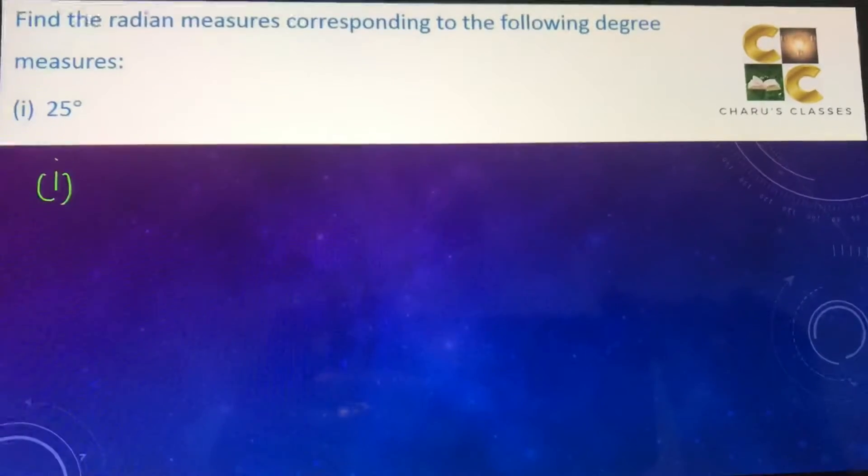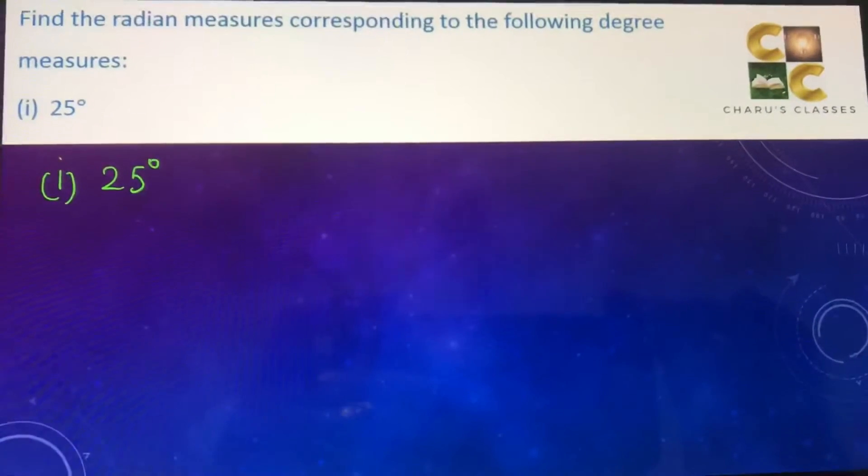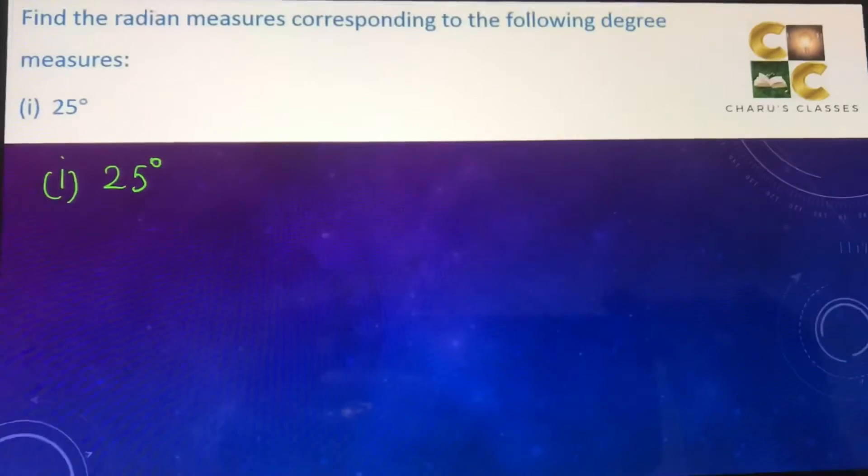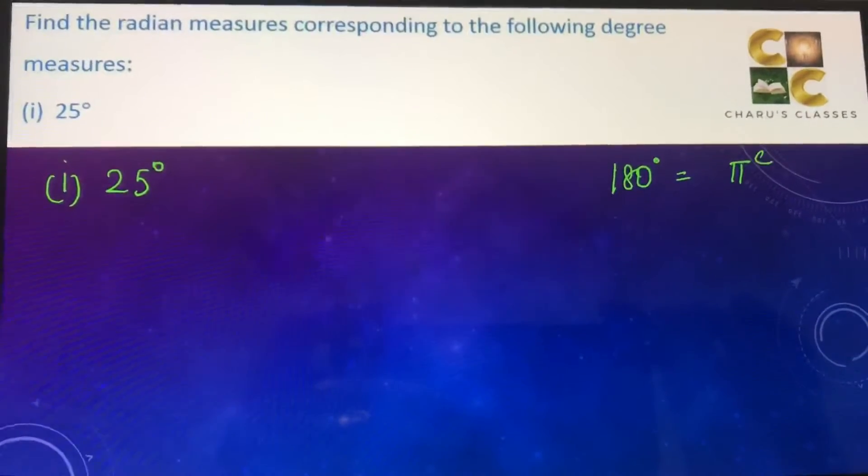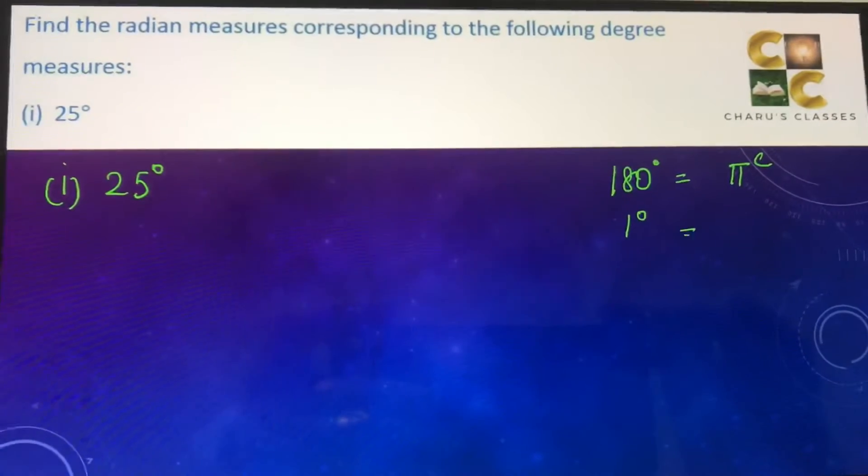First, 25 degrees. Now we know that 180 degrees is π radians, so 1 degree will be π by 180 radians.